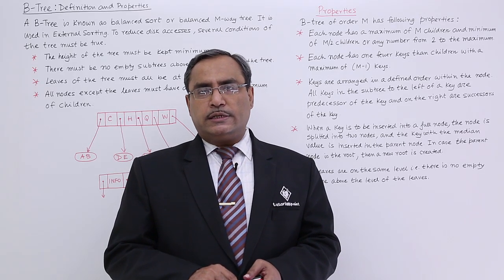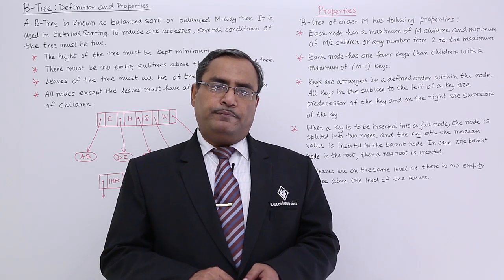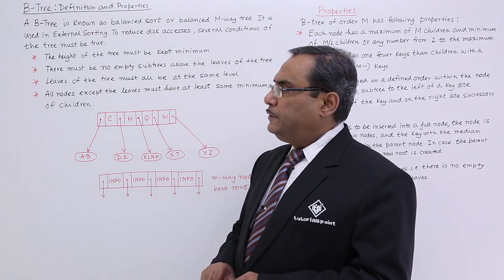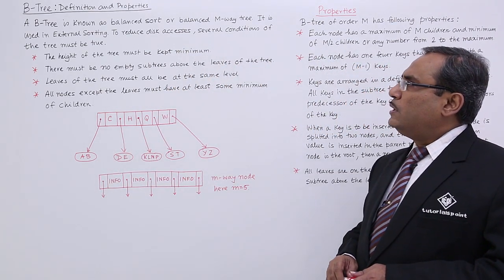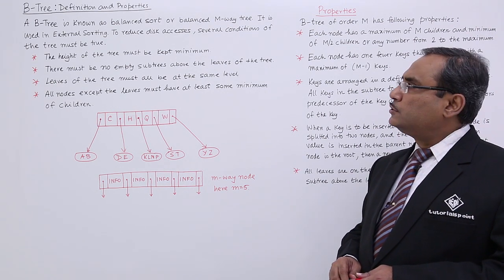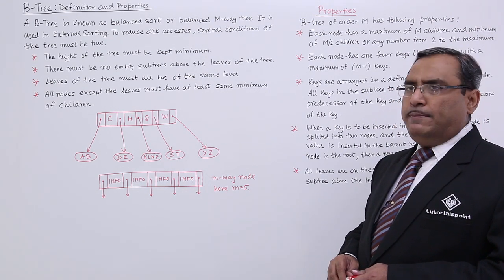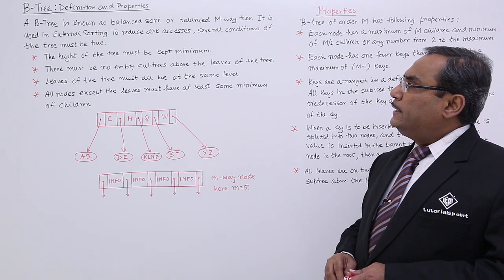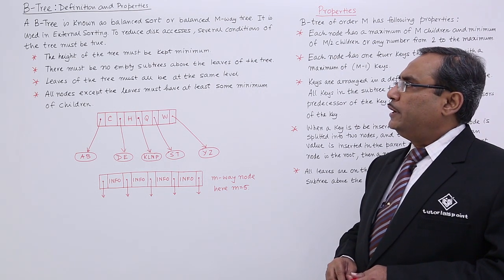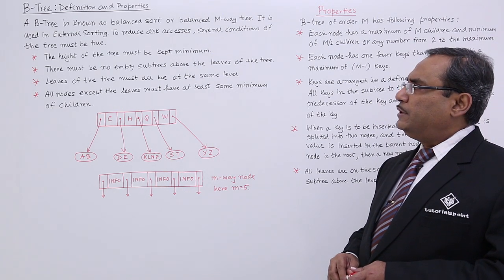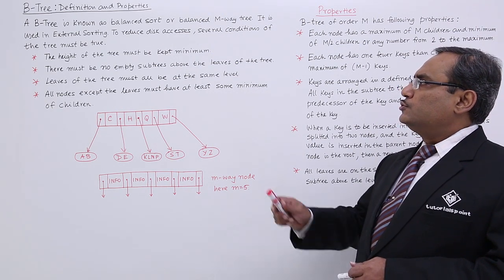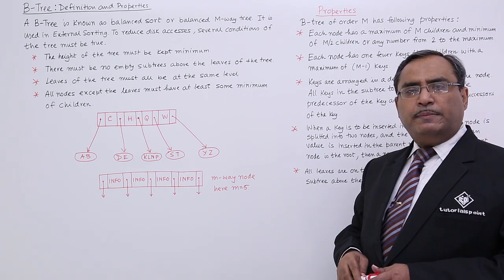In this session, we are discussing B-Tree and B-Tree can be defined in this way. A B-Tree is known as Balanced Sort or Balanced M-Way tree. It is used in external sorting to reduce disk accesses. Several conditions of the tree must be true, and these are the conditions that must be true.